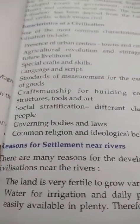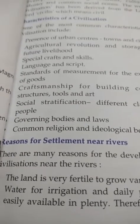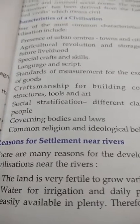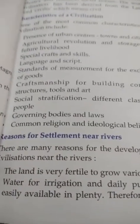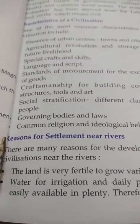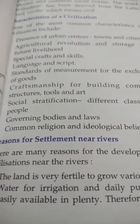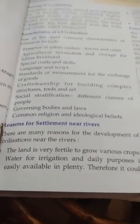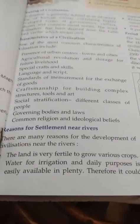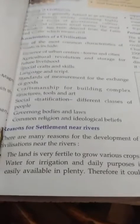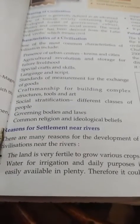The next topic is the reason for settlement near the rivers. There are many reasons. First, the land is very fertile, because of that people preferred to live near the river. Second, water for irrigation and daily purposes — in those days, people depended on rivers for daily needs since there was no tap water facility.